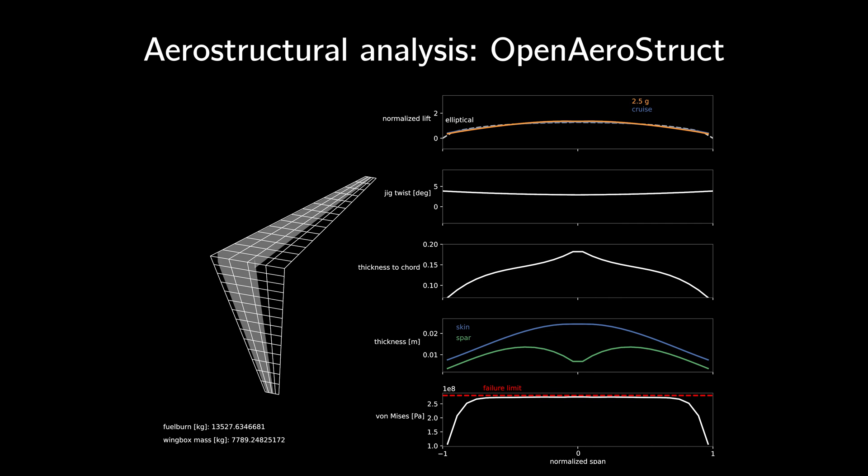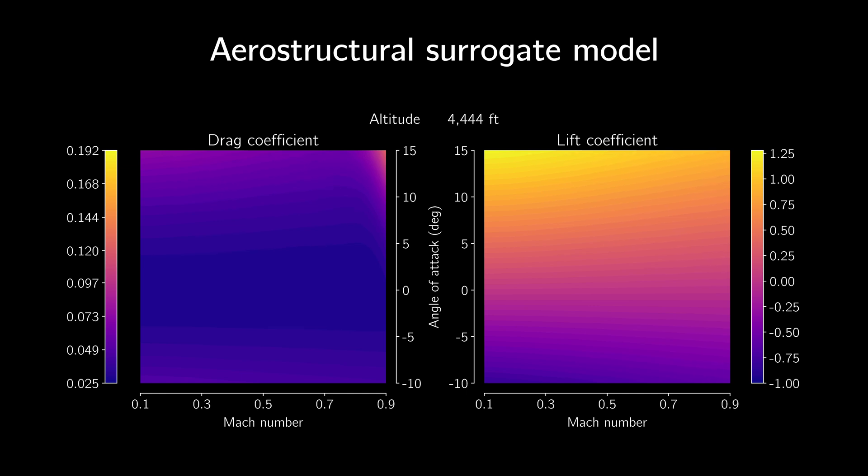For the aerostructural analysis, we use a tool called Open Aerostruct. It uses a finite element beam model and vortex lattice flow solver. While it's very fast, plugging it directly into Open Concept's mission analysis loop would be impractical and slow. Instead, we use a surrogate model trained with aerostructural analyses. The surrogate model takes an altitude, angle of attack, and mach number, and returns lift and drag coefficients. This animation shows the lift and drag coefficients with respect to angle of attack and mach number as it sweeps through the range of altitudes. Using this surrogate model, Open Concept can approximate the fuel burn to within about a tenth of a percent.